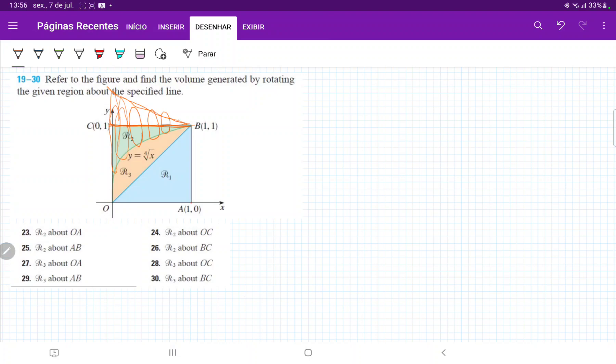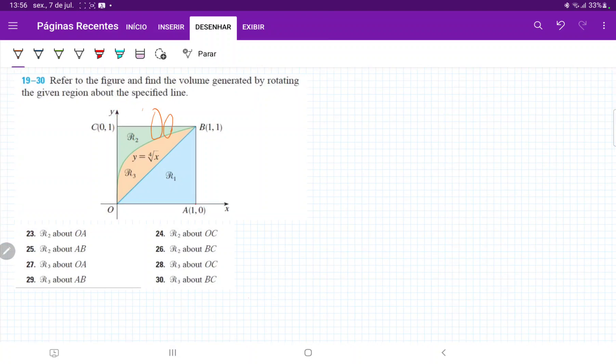When we rotate it about BC, we're summing up all these circles. As we can see, we're summing them across the x-axis. We're stacking them up horizontally.